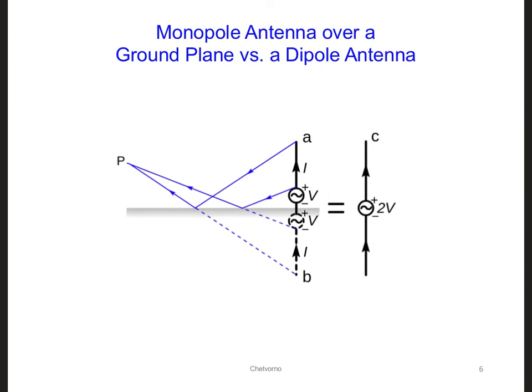Here's a diagram of how a monopole antenna works. Above the ground plane, the radiation pattern is the same as for that of a dipole antenna. Here's the dipole antenna. This dotted line is an image current.